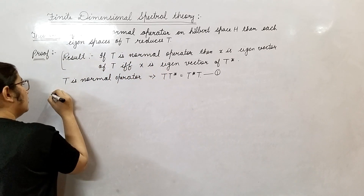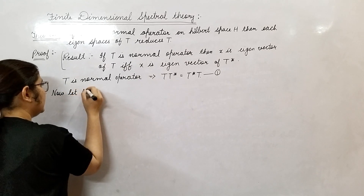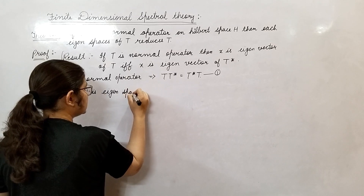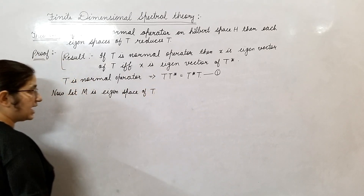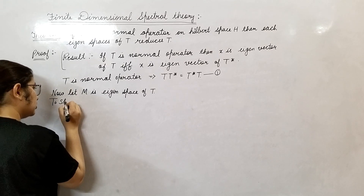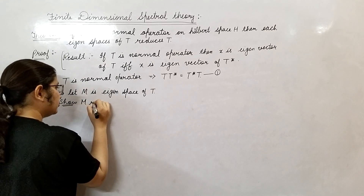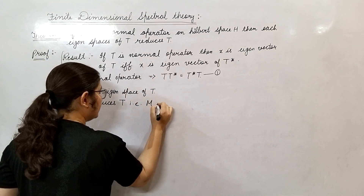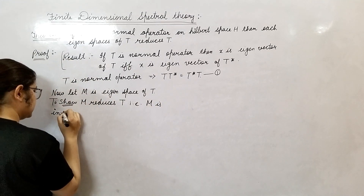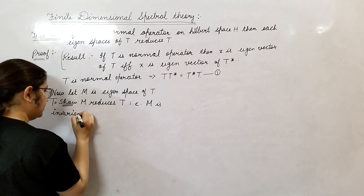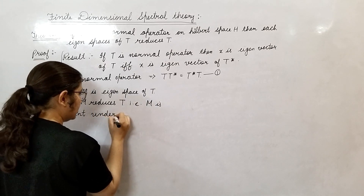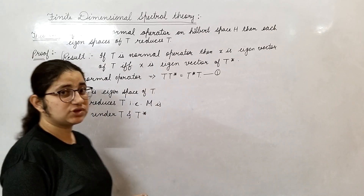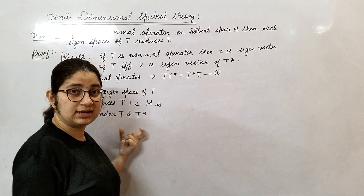Let M be an eigenspace of T. If M is an eigenspace of T, what we need to show is that M reduces T — that is, M is invariant under T and T*. In the previous video I have shown you that M is invariant under T.